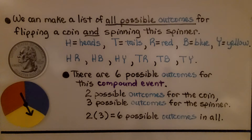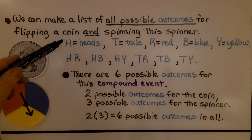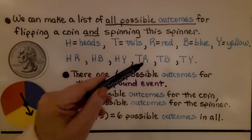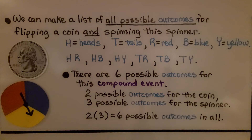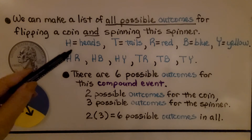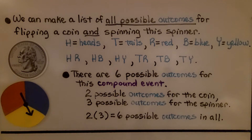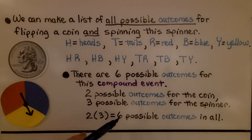We can make a list of all possible outcomes for flipping a coin and spinning this spinner. Using H for heads, T for tails, R for red, B for blue, and Y for yellow, the outcomes are: heads-red, heads-blue, heads-yellow, tails-red, tails-blue, tails-yellow — six possible outcomes total. There are two outcomes for the coin and three for the spinner, and two times three equals six possible outcomes in all.